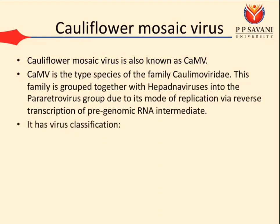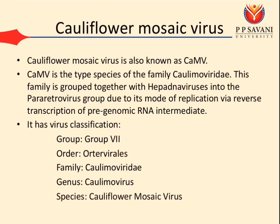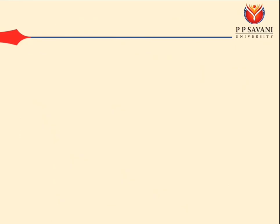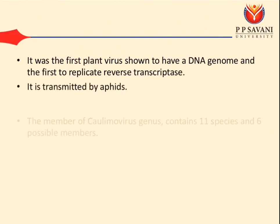It has virus classification: Group 7, Order Ortervirales, Family Caulimoviridae, Genus Caulimovirus, Species Cauliflower Mosaic Virus. It was the first plant virus shown to have a DNA genome and the first to replicate via reverse transcriptase. It is transmitted by aphids.